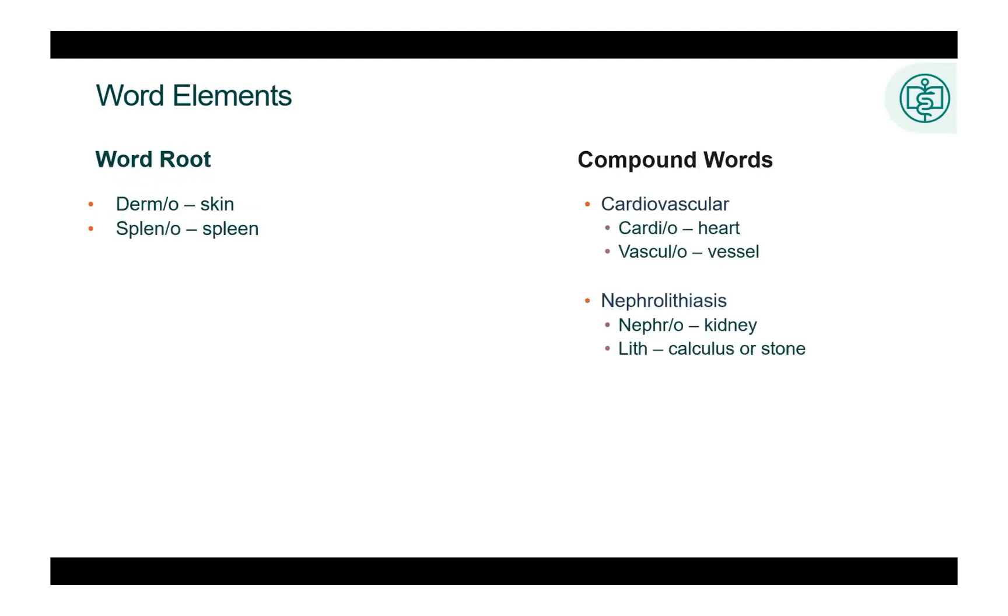The base of a word is considered the root. These are terms that are the main portion of a medical term. A root word often defines the body area or system being discussed, such as derm for skin or splen for spleen. It is possible for a word to have multiple roots, which is referred to as a compound word.